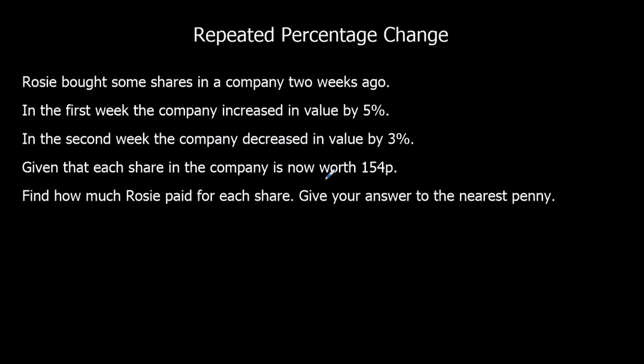So if we start with, we say how much Rosie paid, and we're going to call that X. So if we say Rosie paid X for each share, in the first week it increased by 5%. So as a multiplier, if we've got 100% and we add on 5%, that's 105%. So the multiplier is a decimal of 1.05, so 105 divided by 100.